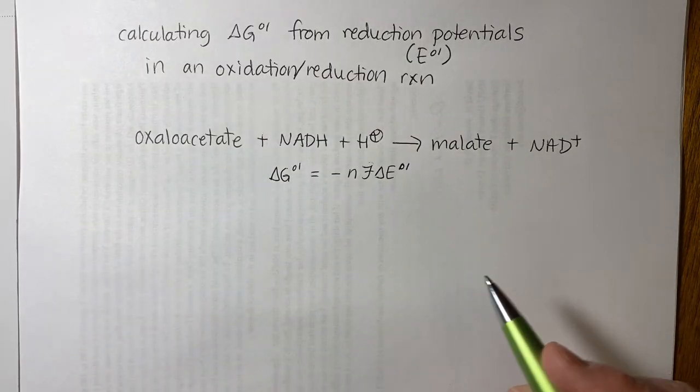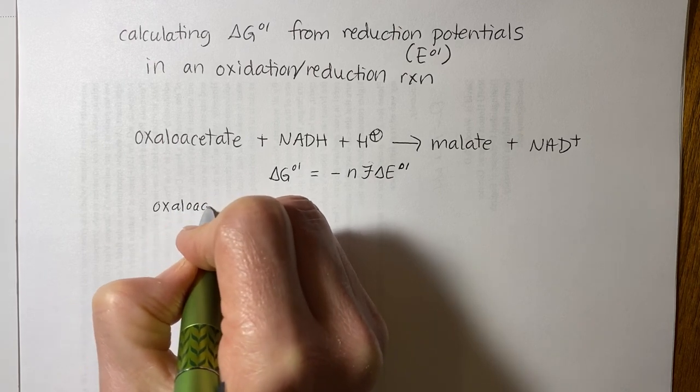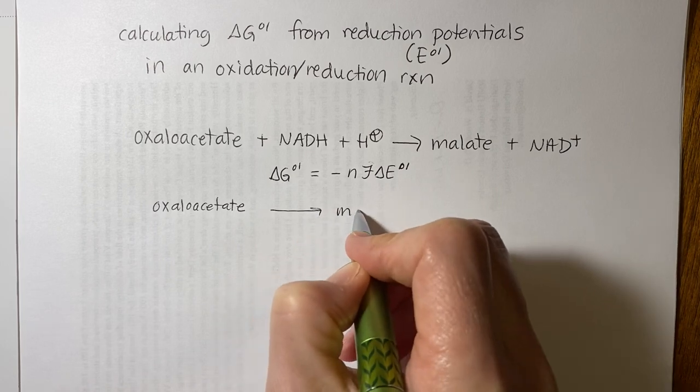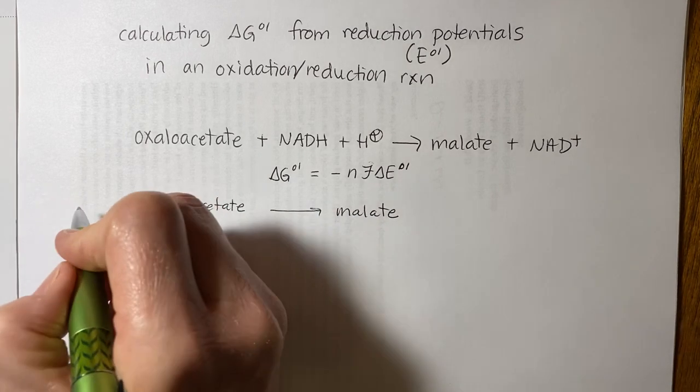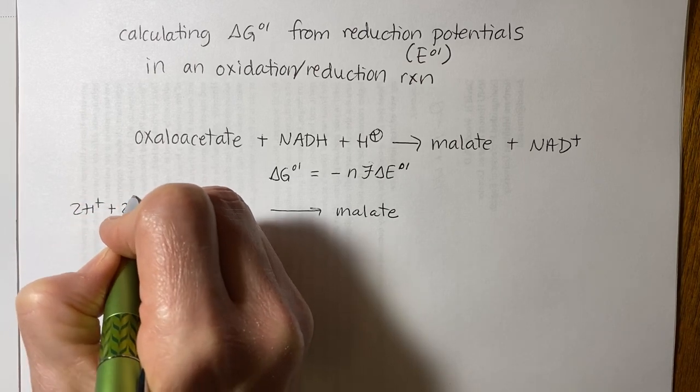So let's write those down. Oxaloacetate goes to malate. And it's two hydrogen ions plus two electrons.